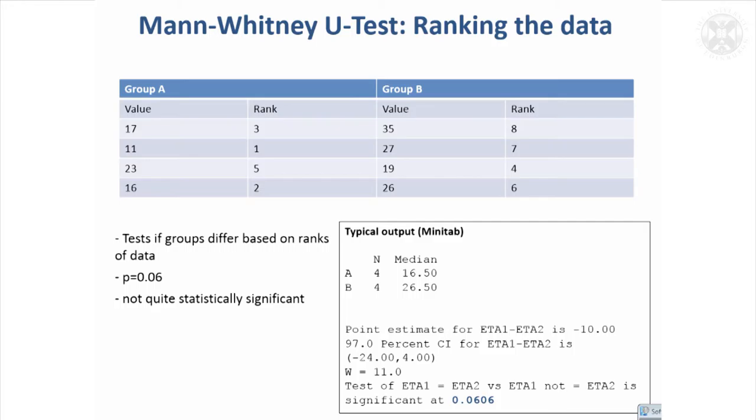And what the test seeks to do is says, are the ranks for group A different, statistically different to the ranks for group B? And I'll not go into all the calculations, but basically this, just like the t-test, can be done in a statistical package and the package will come out with a p-value. And for this data, coincidentally, it's the same as the last p-value. We got a p-value of 0.06. So not quite enough information to show that these ranks are statistically different to these ones.